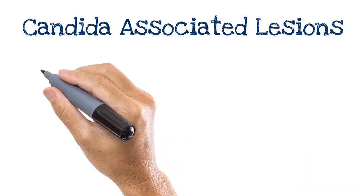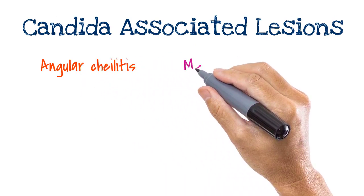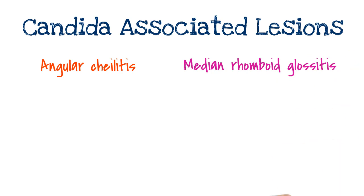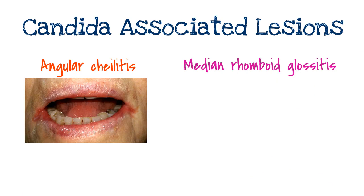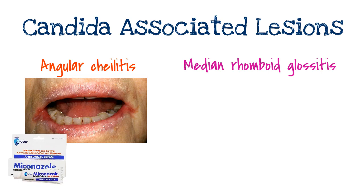It is also important to be aware of candida-associated lesions. Examples include angular cheilitis and median rhomboid glossitis. Angular cheilitis is characterized by soreness, erythema, and fissuring at the angles of the mouth. It is commonly associated with denture stomatitis but may represent a nutritional deficiency, or it may be related to orofacial granulomatosis or HIV infection. Both yeasts — candida — and bacteria — Staphylococcus aureus and beta-haemolytic streptococci — are commonly involved as interacting infective factors. While the underlying cause is being identified and treated, it is often helpful to apply miconazole cream, which is active against both candida and gram-positive cocci.